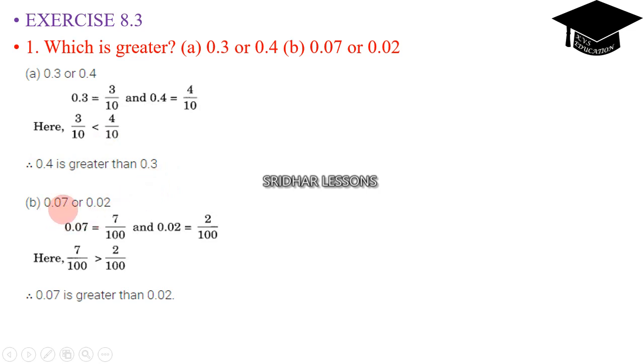Next one, 0.07 or 0.02, which one is greater? 0.07 can be written as 7 by 100 and 0.02 can be written as 2 by 100. Here 7 by 100 is greater than 2 by 100. These denominators are equal. Therefore 0.07 is greater than 0.02.